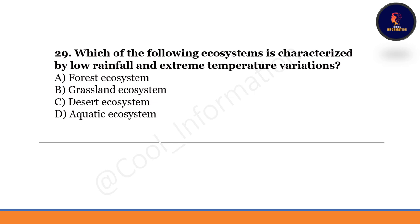Which of the following ecosystems is characterized by lower rainfall and extreme temperature variations? If you read the question carefully, the correct option is option C — desert ecosystem is characterized by lower rainfall and extreme temperature variation.